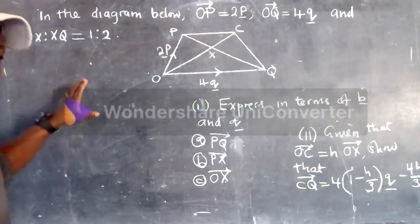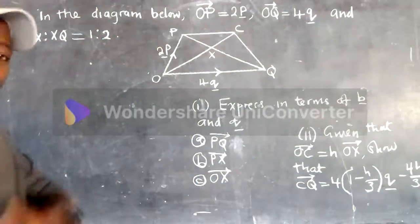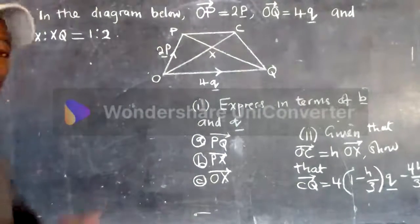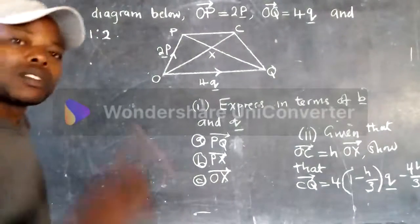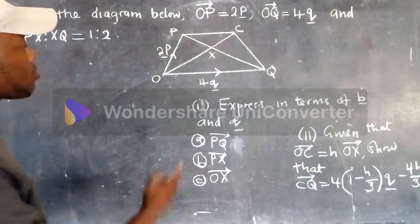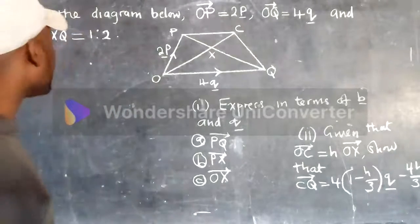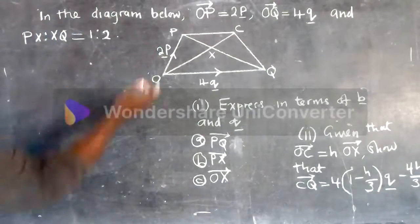Before we attempt to work out this question, there are basic things that you need to know when dealing with vectors. One of them is direction and then the other thing is the ratio, you need to understand the ratio of vectors. So let's talk about direction.